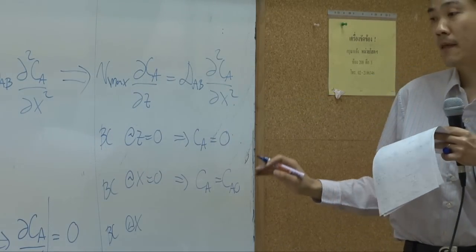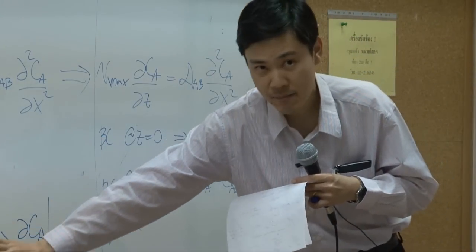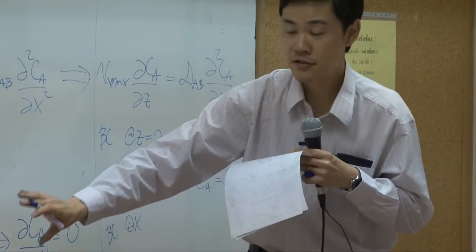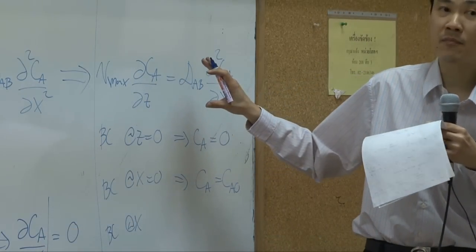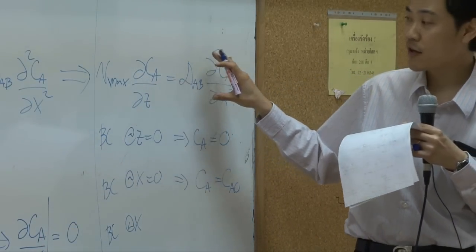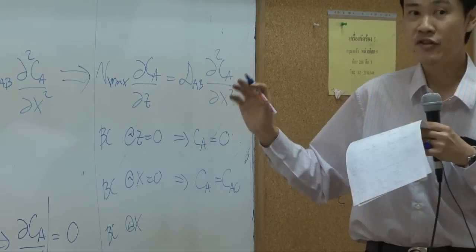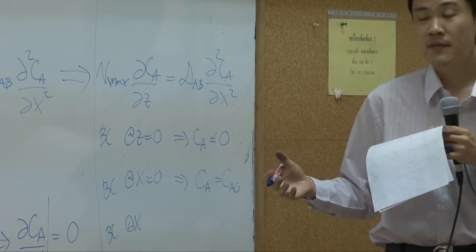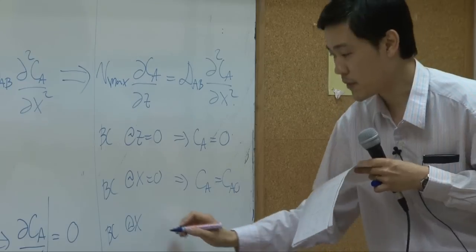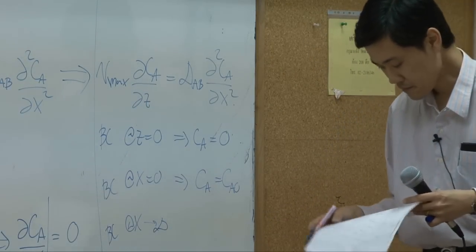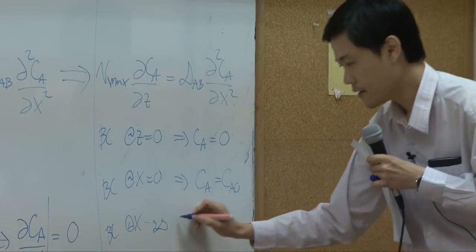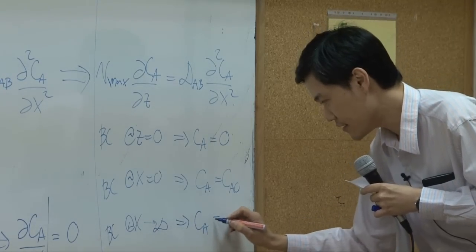You can stick with the same boundary condition—it's true, it's still correct—but the equation will never be solved. In order to solve this equation you need to adjust the boundary condition. The new boundary condition will be: x approaching infinite, then CA is zero.